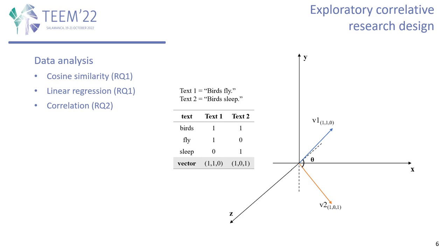Cosine similarity was used to measure theory preference in a dissertation. It is a type of text similarity technique from natural language processing. On the right-hand side is a simple example: Text 1 is converted into vector [1, 1, 1, 0] and Text 2 is converted into vector [1, 0, 1]. The text similarity between them is indicated by cosine of V1 and V2, which equals cosine theta, 0.5 in this case. By applying cosine similarity, we measure the similarity between learning theories, reference terms, and dissertations. The higher the similarity score, the more likely the dissertation mentions that theory.